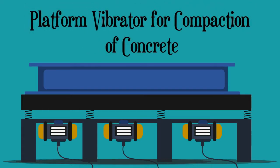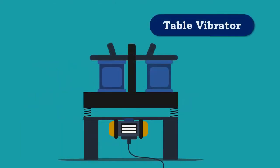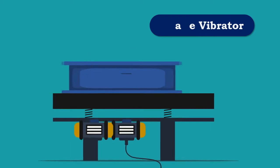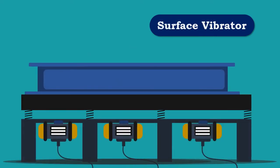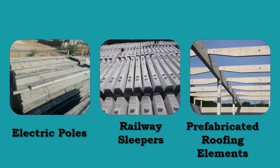A platform vibrator for compaction of concrete is essentially a table vibrator but larger in size. This type of vibrator is used in the manufacture of large prefabricated concrete elements such as electric poles and railway sleepers.